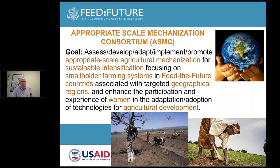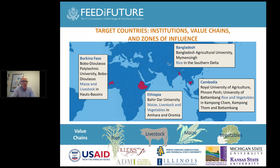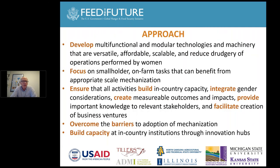The countries we are targeting are two in Asia — Bangladesh and Cambodia — and in Africa, Burkina Faso and Ethiopia. In each case, we have connected with a university and are targeting specific value chains. In Bangladesh and Cambodia, rice is important. In Africa, it's maize and livestock, with livestock somewhat driven by the fact that it is used for animal power. Vegetables are also a very important value chain for both Cambodia and Ethiopia, creating a cross-continental link.